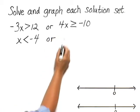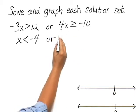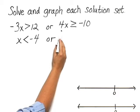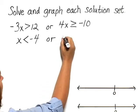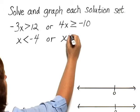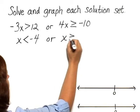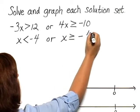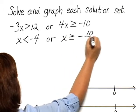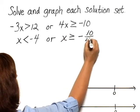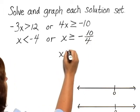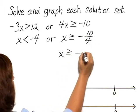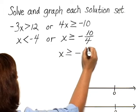Or, dividing both sides of this inequality by 4, we do not need to reverse the direction of the inequality symbol because it's a positive number. So we have x is greater than or equal to negative 10 fourths. Simplifying, we would have x is greater than or equal to negative 5 halves.